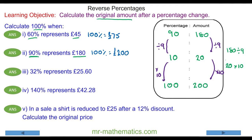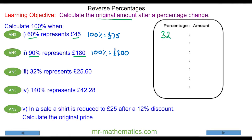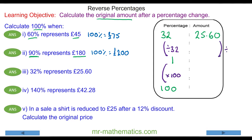For question three, 32% represents £25.60. We're going to work out the original, which is 100%. In this example we go via 1% by dividing 32 by itself, then multiplying by 100. Doing the same to both sides: 25.60 divided by 32 equals 0.8, so 1% represents £0.80, and the original amount — 100% — is worth £80.